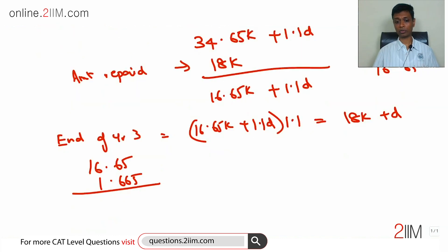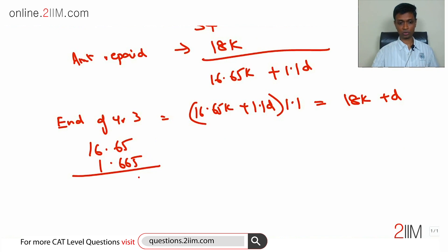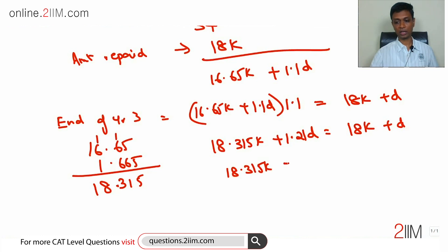So 16.65 × 1.1—add 1.665. This is 5, 1, 13, 3, 1, 16—18.315. So 18.315k + 1.21D = 18k + D. Or 18.315k minus 18k equals D minus 1.21D.